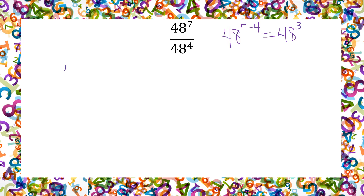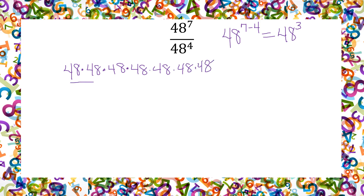The reason this works is because you have 48 multiplied by itself seven times, and on the bottom you have 48 times itself four times.